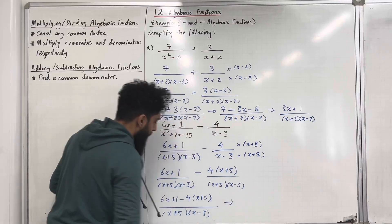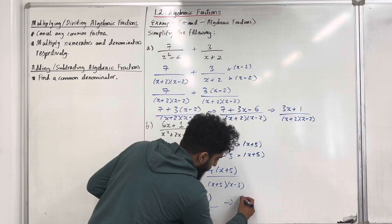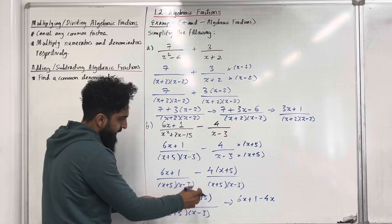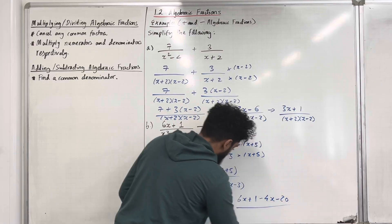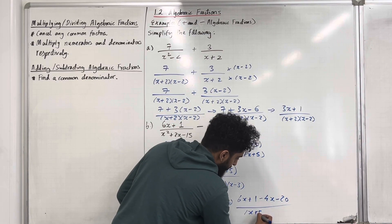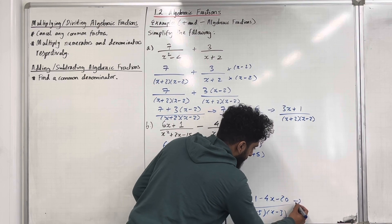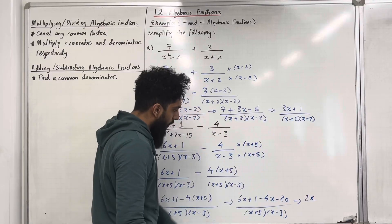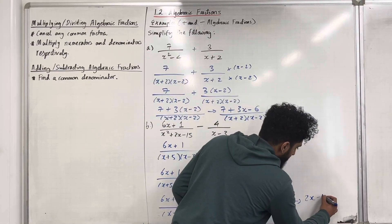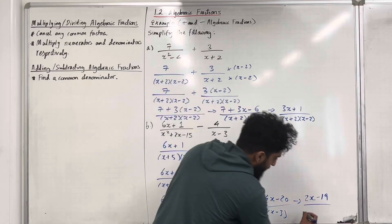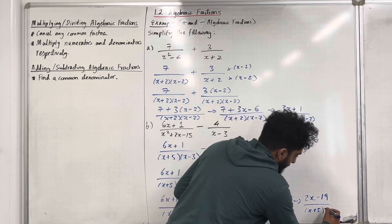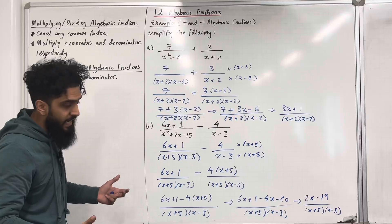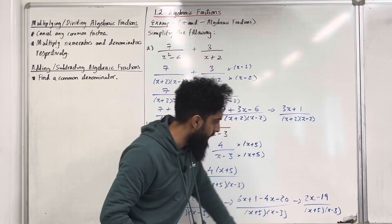We now have a common denominator, so we can combine the fractions to give 6x plus 1 minus 4 lots of x plus 5, all over x plus 5 times x minus 3. Expanding the bracket in the numerator gives 6x plus 1 minus 4x minus 20. Simplifying the numerator: 6x minus 4x is 2x, and 1 minus 20 is minus 19. So the final answer is 2x minus 19, all over x plus 5 times x minus 3. You can't cancel further as there are no common factors in the numerator and denominator.